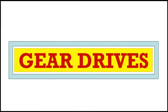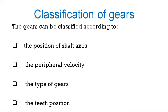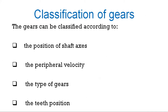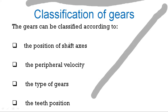Good morning. In this session, we will see the basic classification of different types of gears. Gears are mainly classified based on: first, the position or orientation of the shaft axis; second, the peripheral velocity of the gears; third, the type of gears; and fourth, based on the teeth position. So we have four types of classifications of these gears.